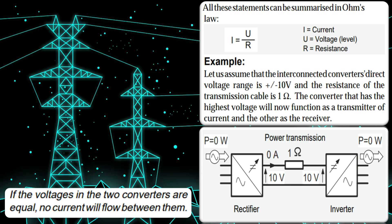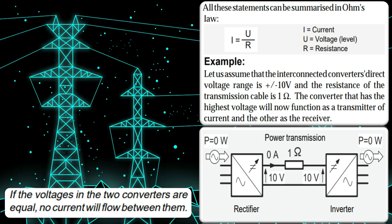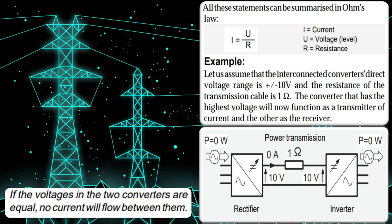Only the magnetic field is present at the Earth's surface. The highest static or low-frequency magnetic fields in converter stations are expected around the incoming and outgoing lines.